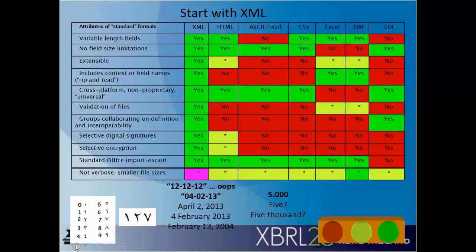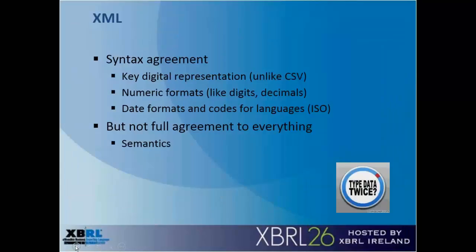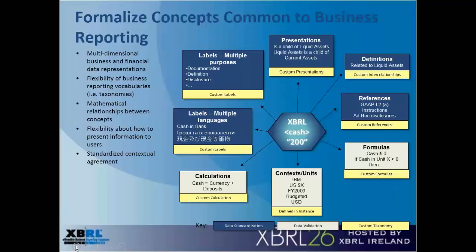XML brought together agreement on numbers, date formats, decimals and thousand separators — things that would separate someone in the United States from someone in Belgium or Germany when exchanging basic numbers and dates. XML was a key digital representation. For example, the CSV — comma-separated value file — is called CSV for the commas in the United States, but in most of continental Europe where the comma is the thousand separator, they actually use a semicolon instead. XBRL then began to build on XML to standardize the semantics — the business meaning that's common in business reporting.